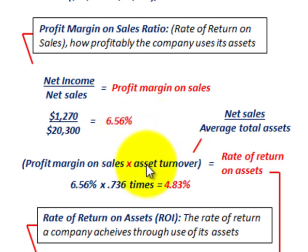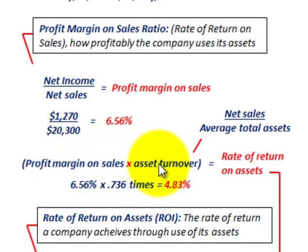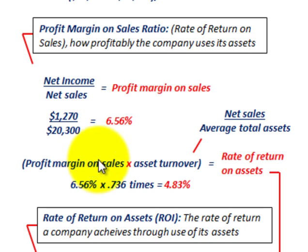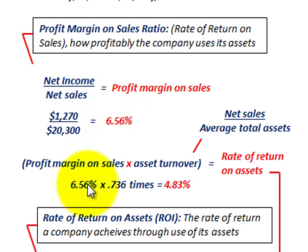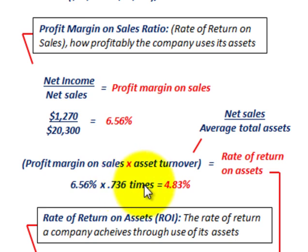We can determine our rate of return on assets by taking our profit margin on sales times the asset turnover. Remember, asset turnover was net sales divided by average total assets. Our profit margin on sales was 6.56% and our asset turnover was 0.736 times. Multiplying those together gives us 4.83%.